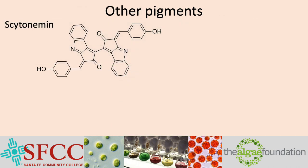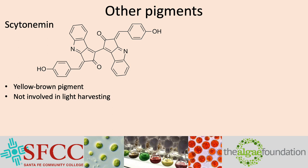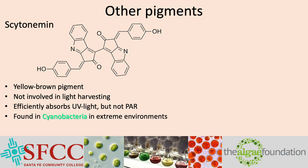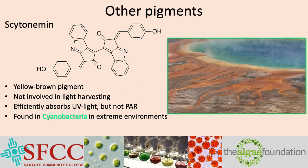There are other non-photosynthetic pigments in algae, such as scytonemin. Scytonemin is a yellow-brown pigment not involved in light harvesting — it effectively absorbs ultraviolet light, but not PAR. Cyanobacteria in extreme environments produce scytonemin and are the brown organisms seen in photos of hot springs at Yellowstone National Park. You can think of scytonemin as a 3.5 billion-year-old sunscreen responsible for allowing life to leave the oceans and colonize the land under intense UV light, before the ozone layer formed to block UV-C.